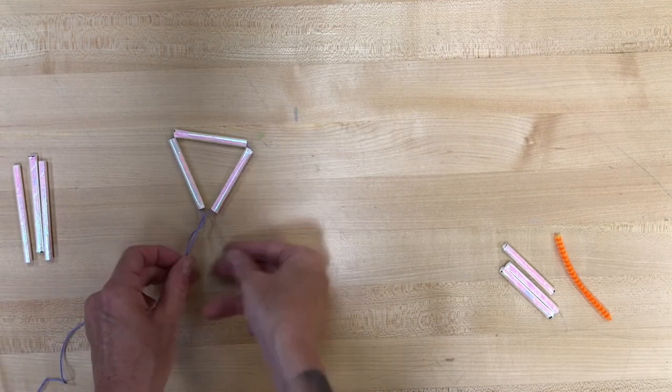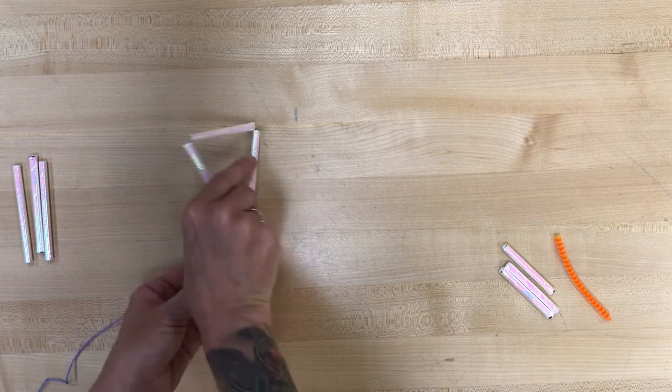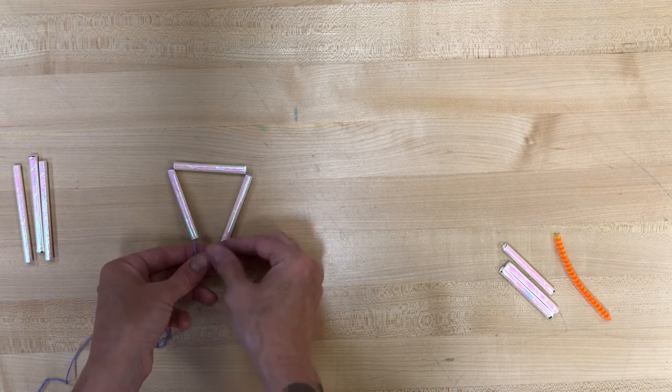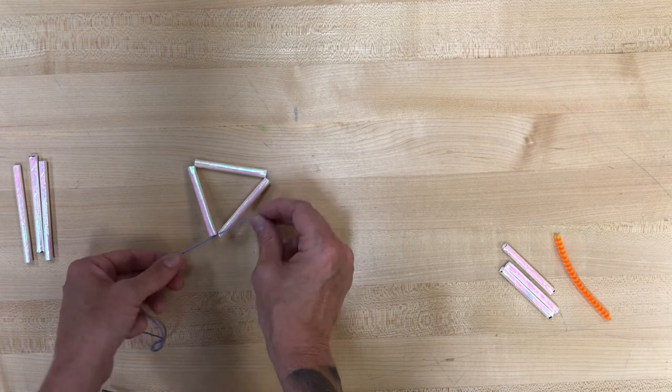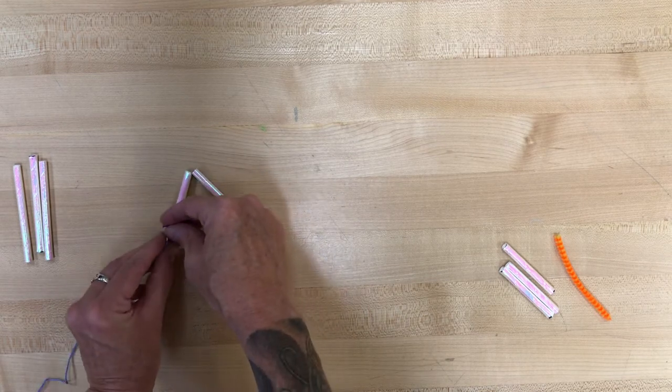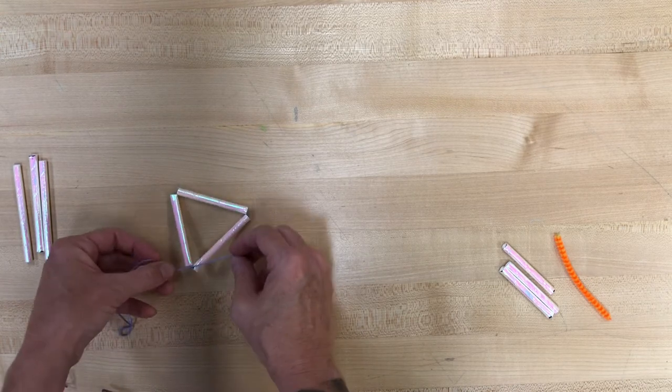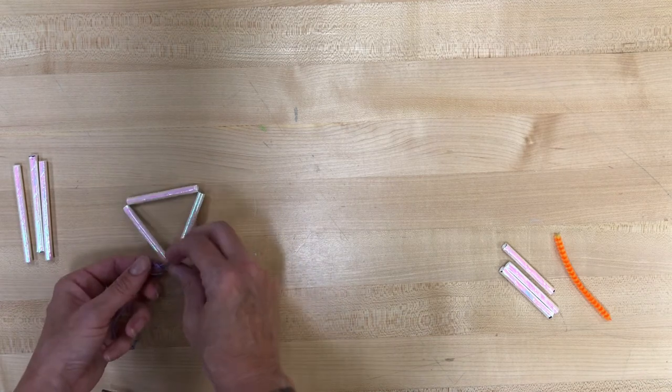And then you're basically gonna tie a double knot. And you want the knot to be strong enough that your straws are going to keep that triangle shape. So go ahead and pull it together, and then knot it. And we'll worry about cutting off the tail later. For now, we just want to make sure that it keeps its shape.